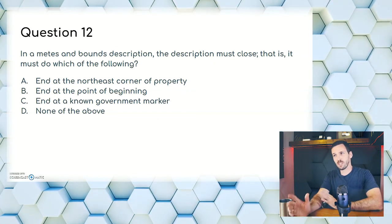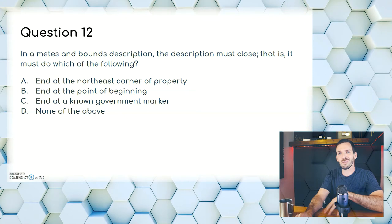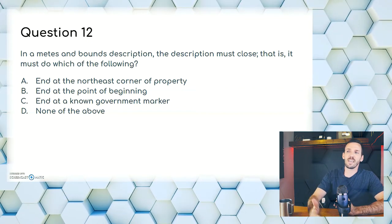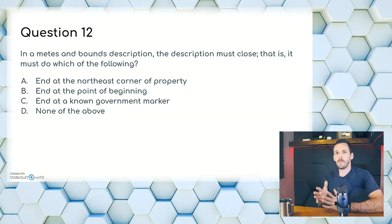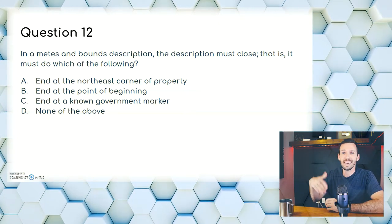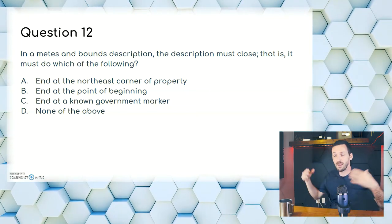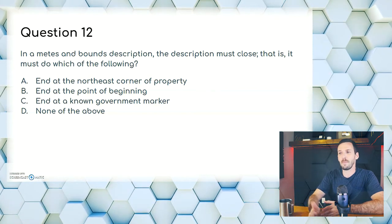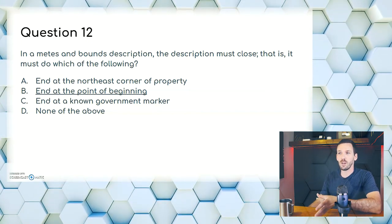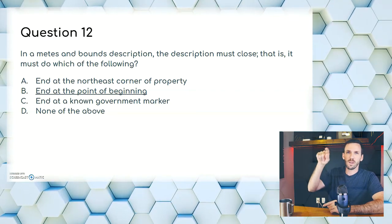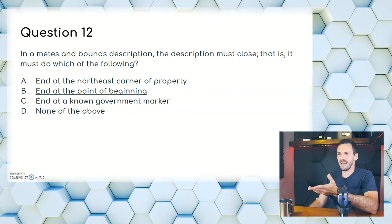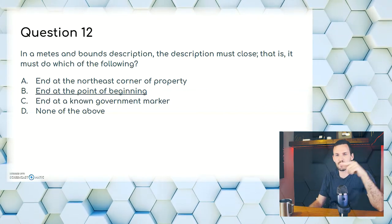Question twelve: in a metes and bounds description, the description must close — that is, it must do which of the following? A, end at the northeast corner of the property; B, end at the point of beginning; C, end at a known government marker; or D, none of the above. Property boundaries must close — you can't have a U-shaped border. Countries have borders, houses have property lines. The property closes where it begins. Answer is B. Don't overthink it — a parcel of land ends where it begins; it has to finish the loop.